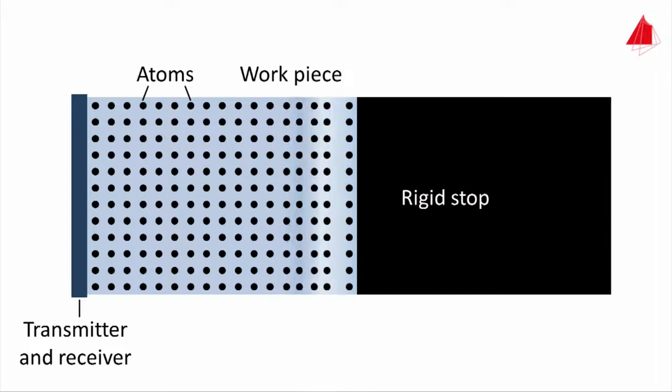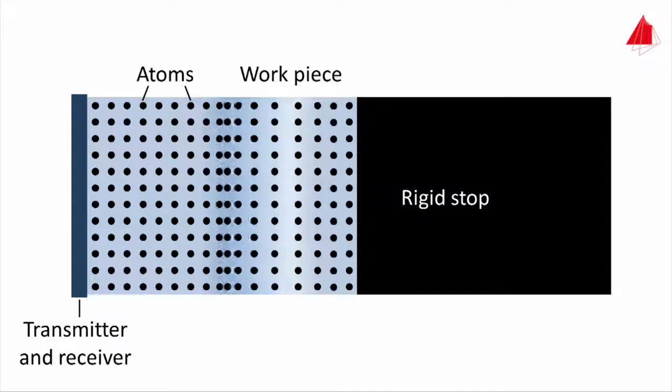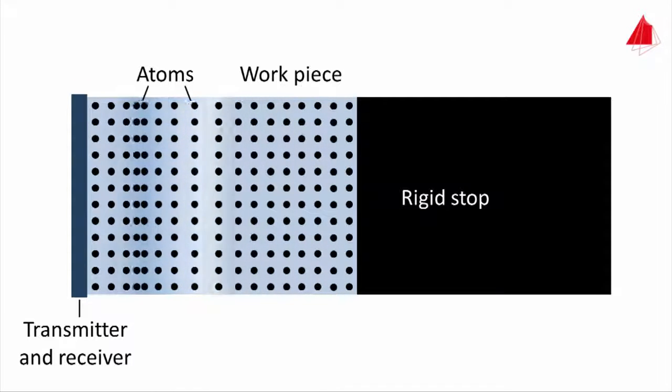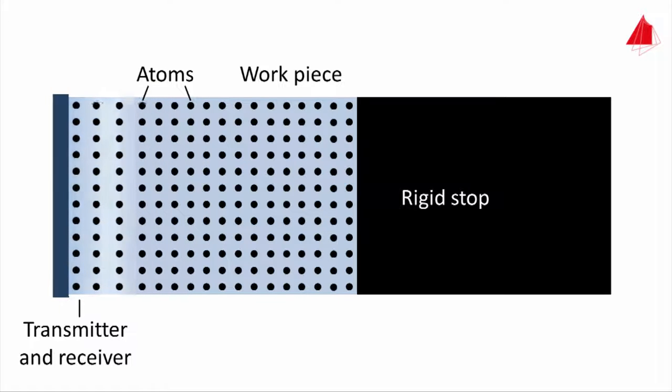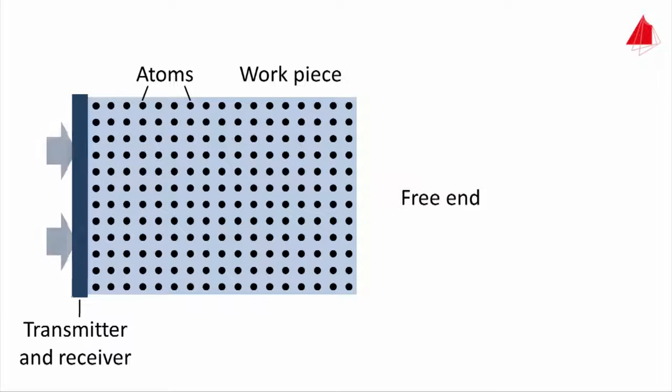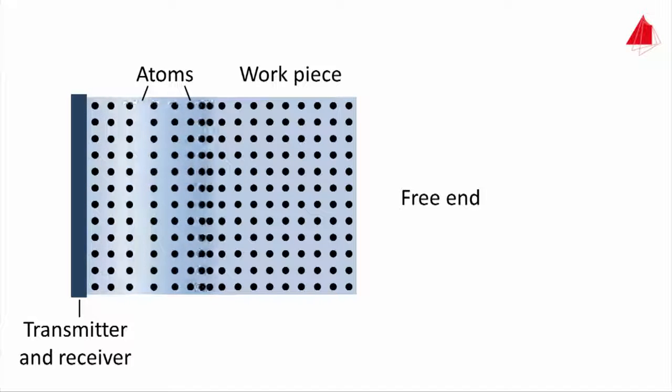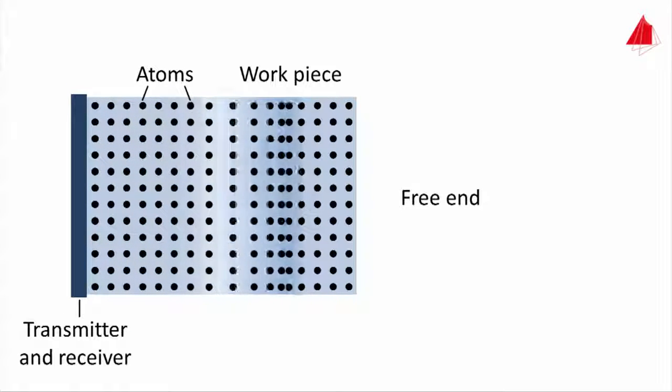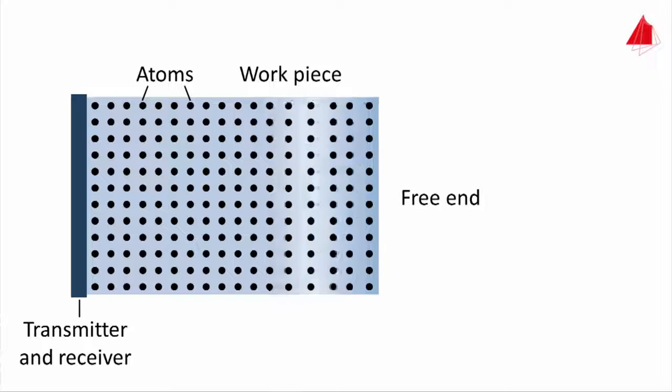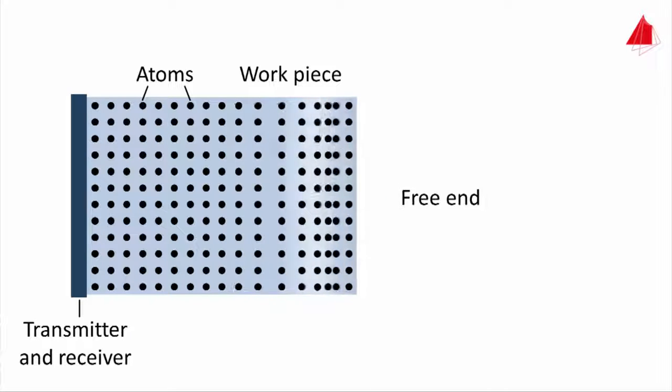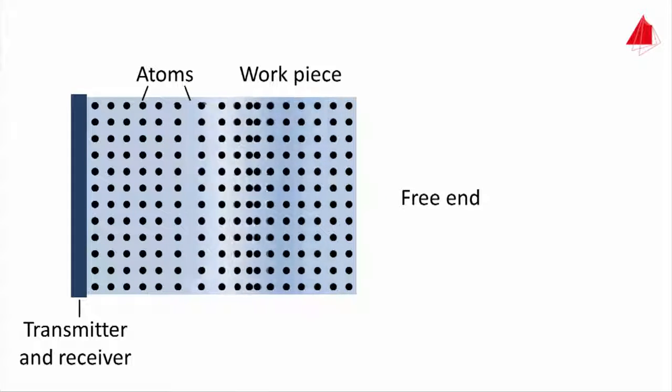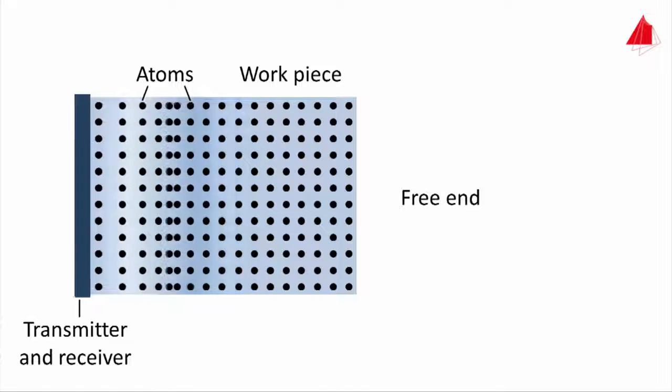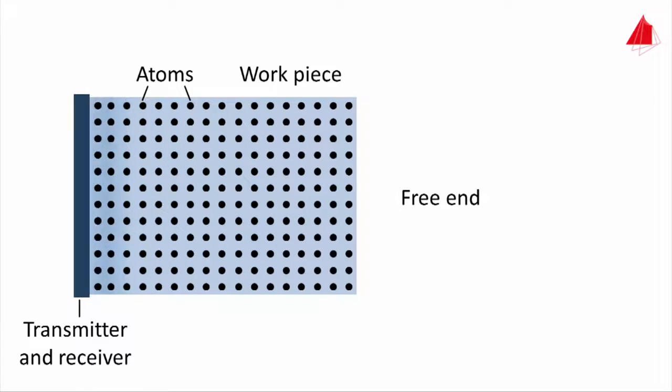When the sound wave reaches the rigid stop at the right side, it is reflected and runs back towards the disc, which now serves as a receiver. A free end is also able to reflect a wave; in this case, however, the tensile side runs ahead in the reflected wave and finally deflects the receiver to the right.